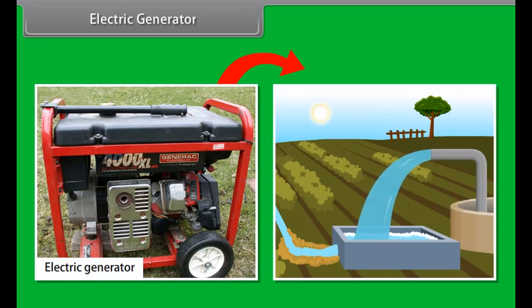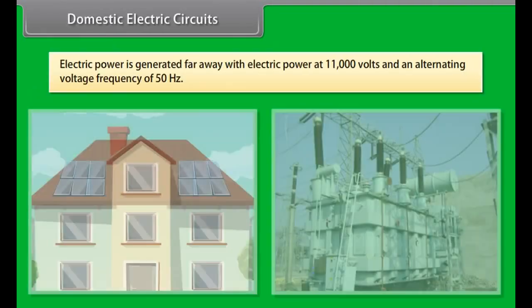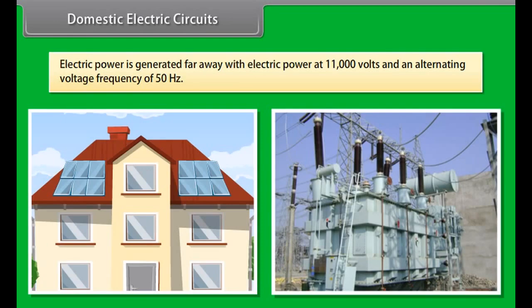Electric Generator. An electric generator converts mechanical energy to electrical energy. It forces electrical charge to flow through an external electrical circuit. Examples include a water pump which causes water to flow but do not create water.